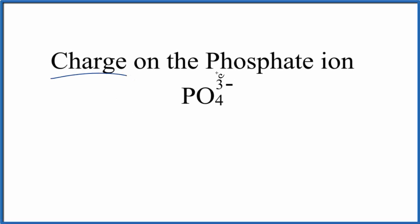Let's take a look at the charge on the phosphate ion. That's PO4 3 minus. So the charge on the phosphate ion is 3 minus. There's two ways that we can figure that out.